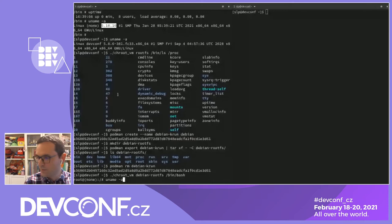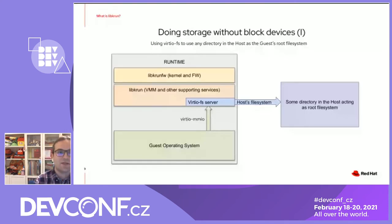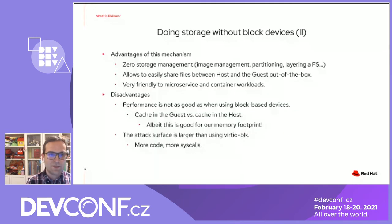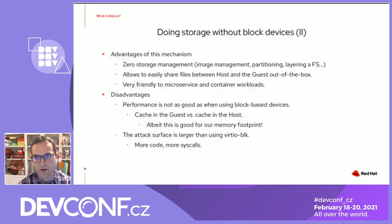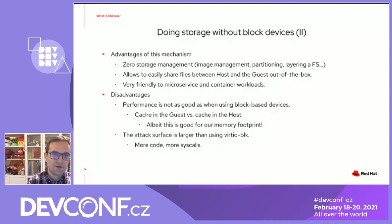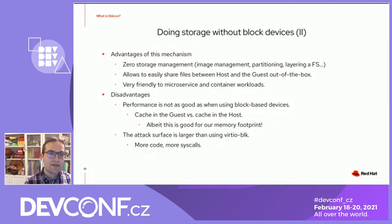Going back to the presentation, let's talk about the advantages and disadvantages of this mechanism. On the advantages side, this approach simply means that we have a requirement of zero storage management. We don't need to deal with disk images or disk formats. We don't need to do partitioning, we don't need to layer a file system on it, we don't need to stream the image, and we don't need to grow the image or worry about running out of space. It also means that it's very easy to share files between the host and the guest — we don't need to configure any kind of shared folder because that's how it works by default. And it's very friendly to microservice and container workloads, which was one of the main goals of LibKRun.